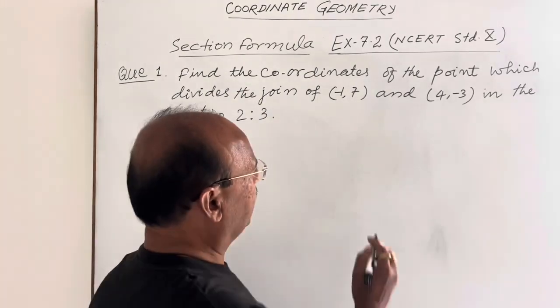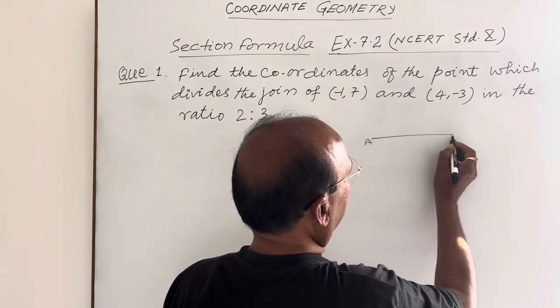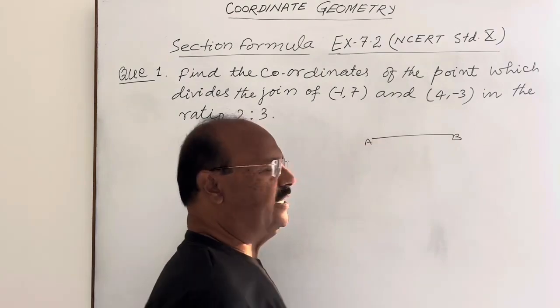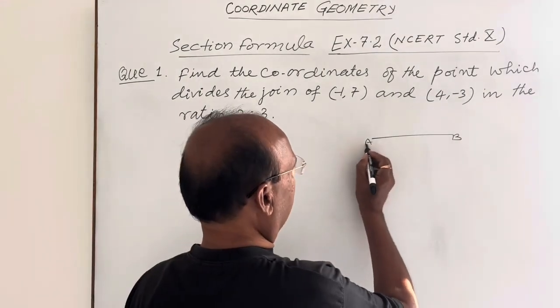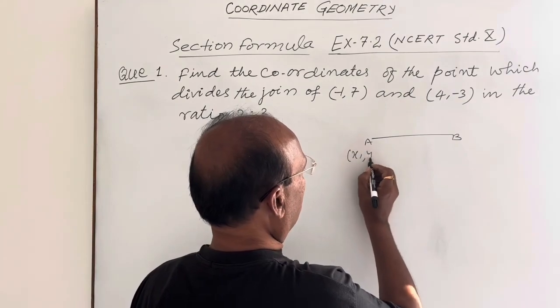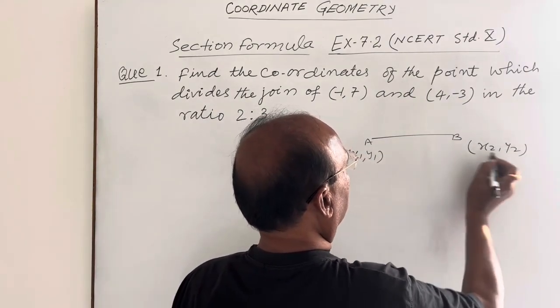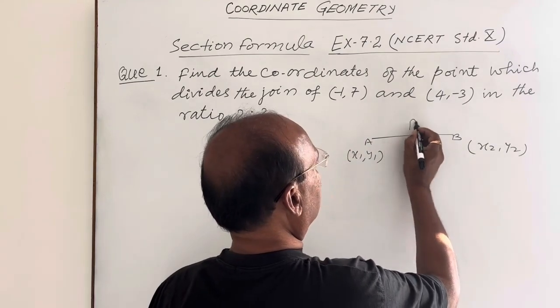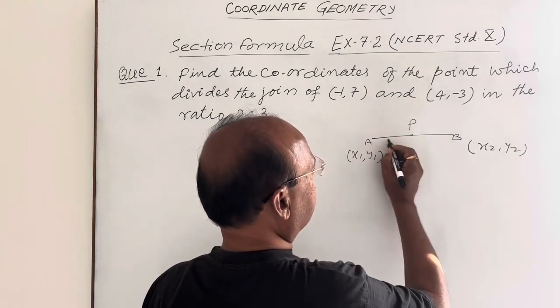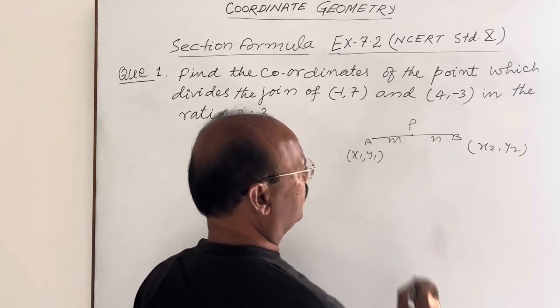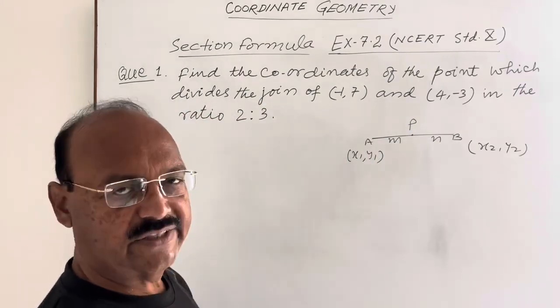If A and B are any two points and AB is a line segment joining the points A and B, and if coordinates of A are (x1,y1) and coordinates of B are (x2,y2), then we can find out coordinates of any point P which divides the line segment AB in the ratio m:n very easily with the help of section formula.